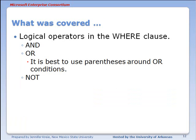What we've covered here is logical operators in the WHERE clause. We've looked at the AND operator, where two conditions have to be true before data is displayed. We've looked at the OR operator, where one condition out of two or more can be true and the data is displayed. We've also learned that the OR operator can be tricky and we want to put parentheses around it to control how data is evaluated. We've also seen an example of using the NOT operator.